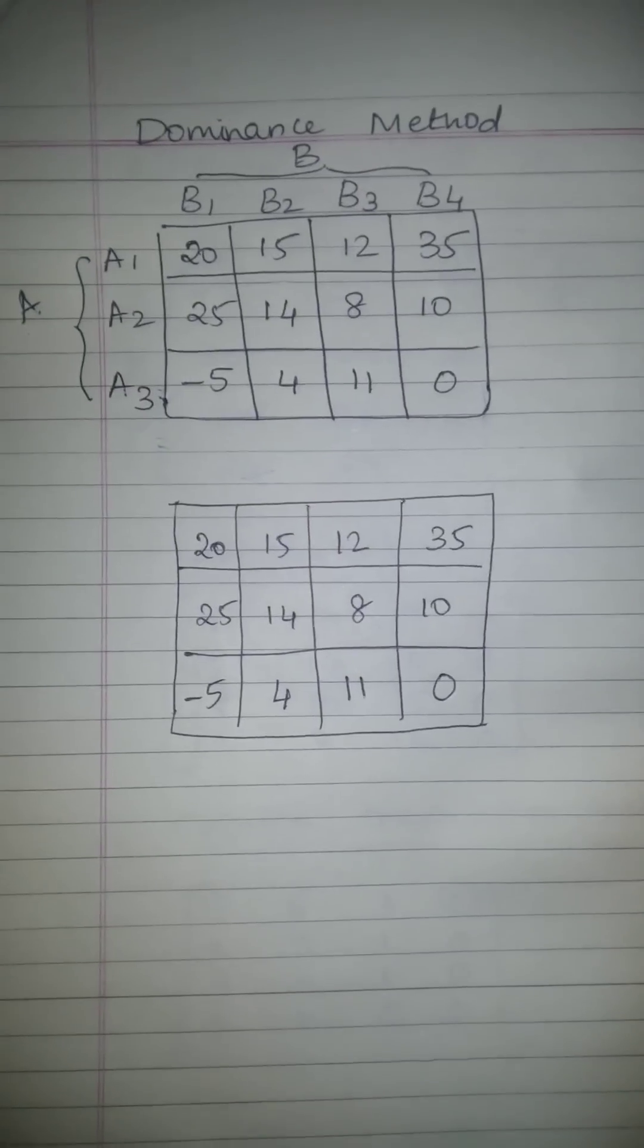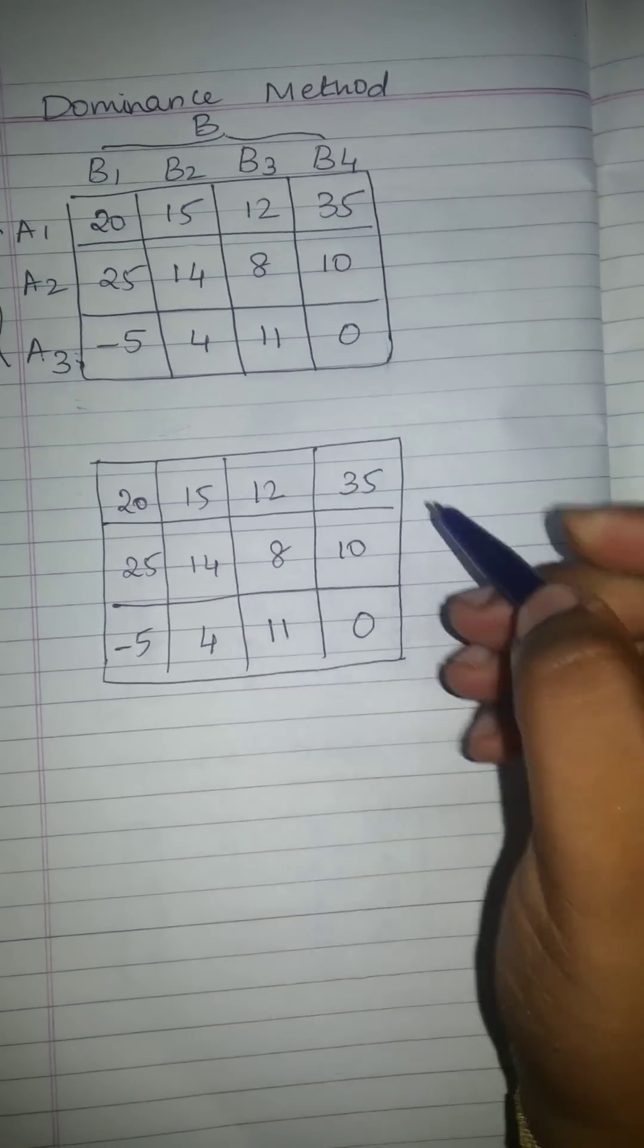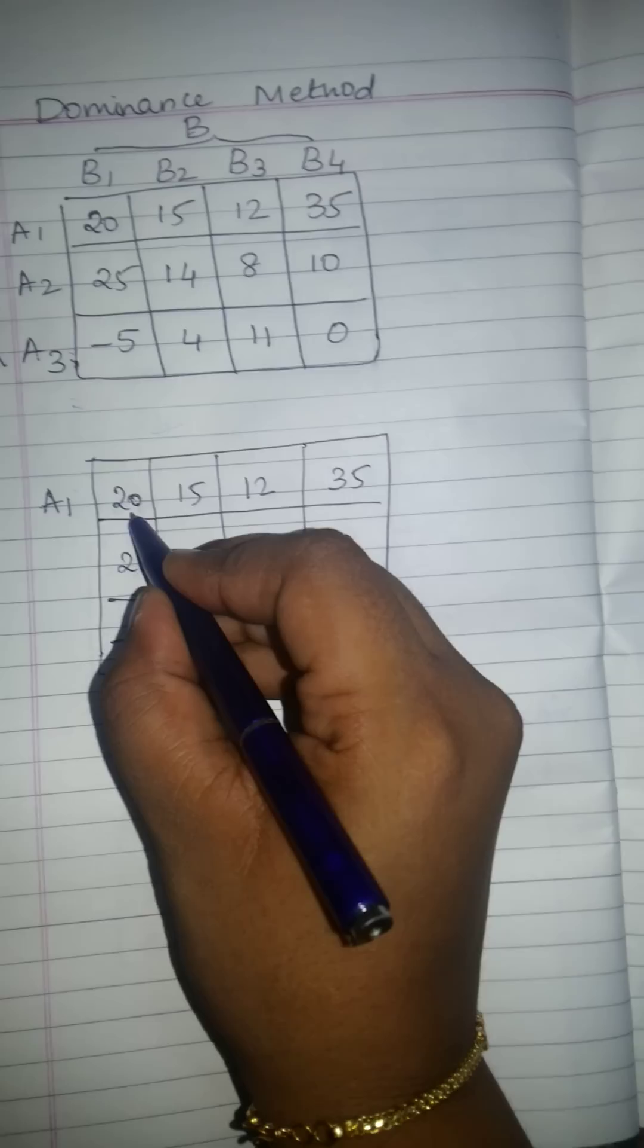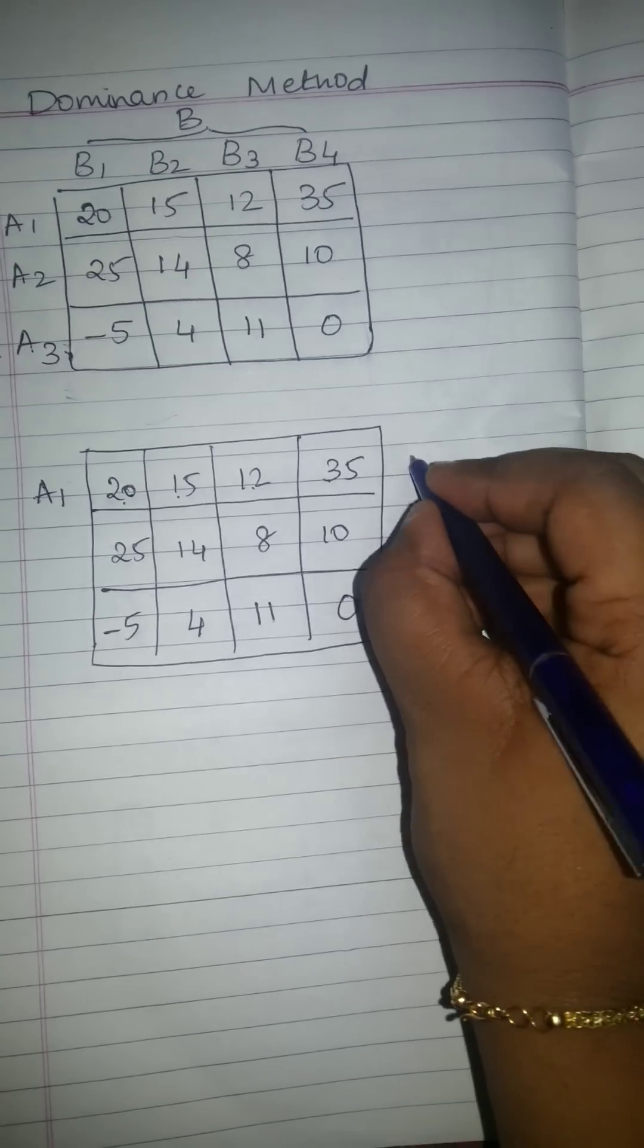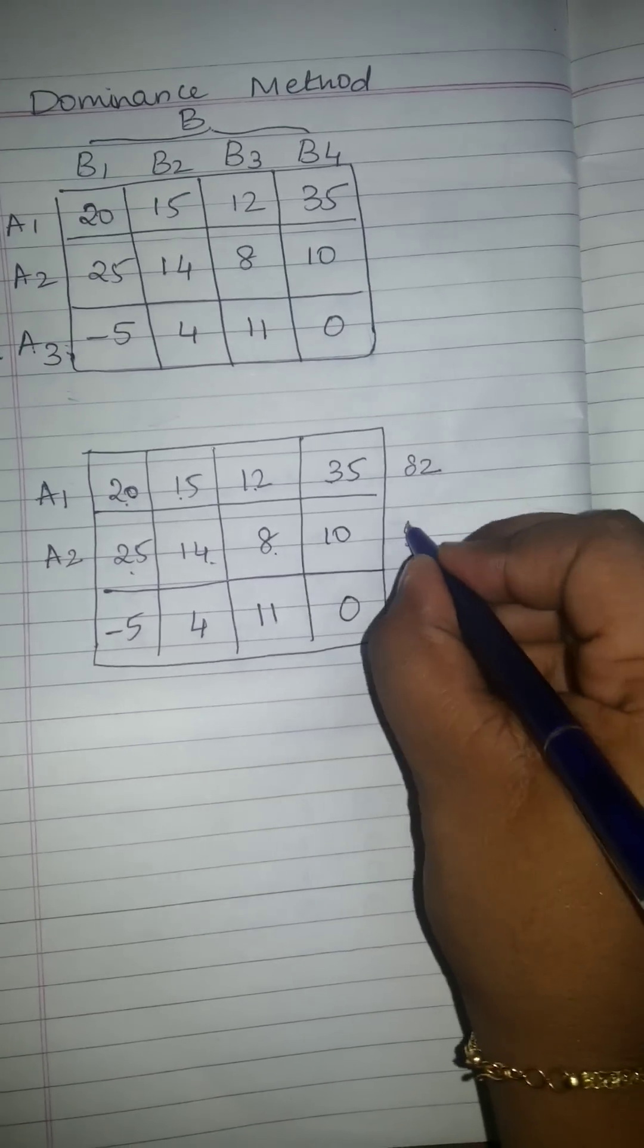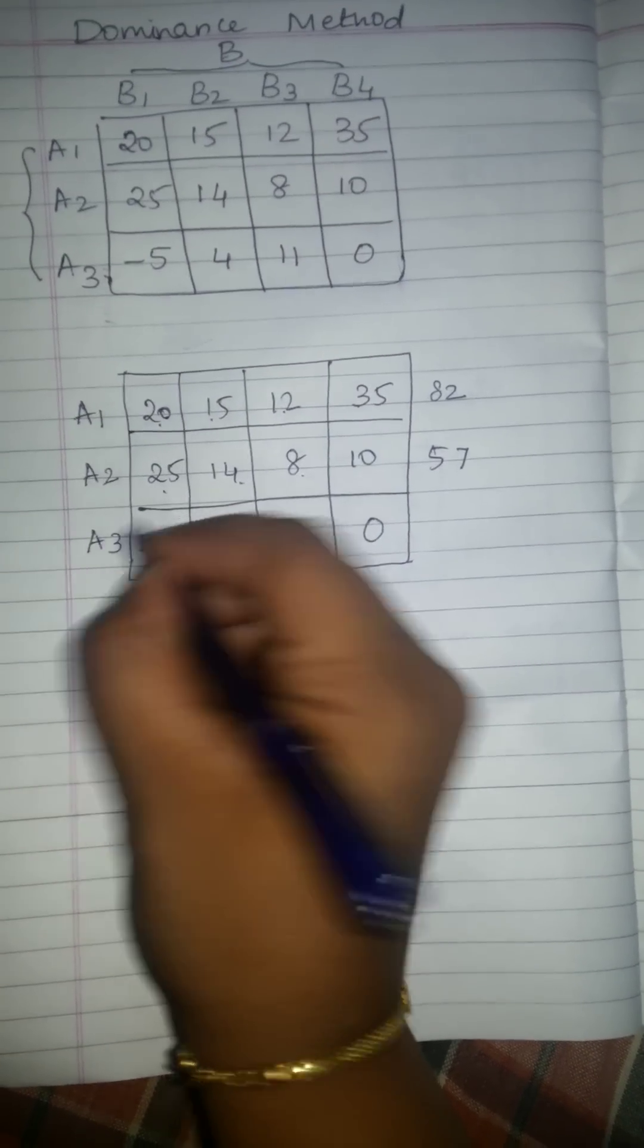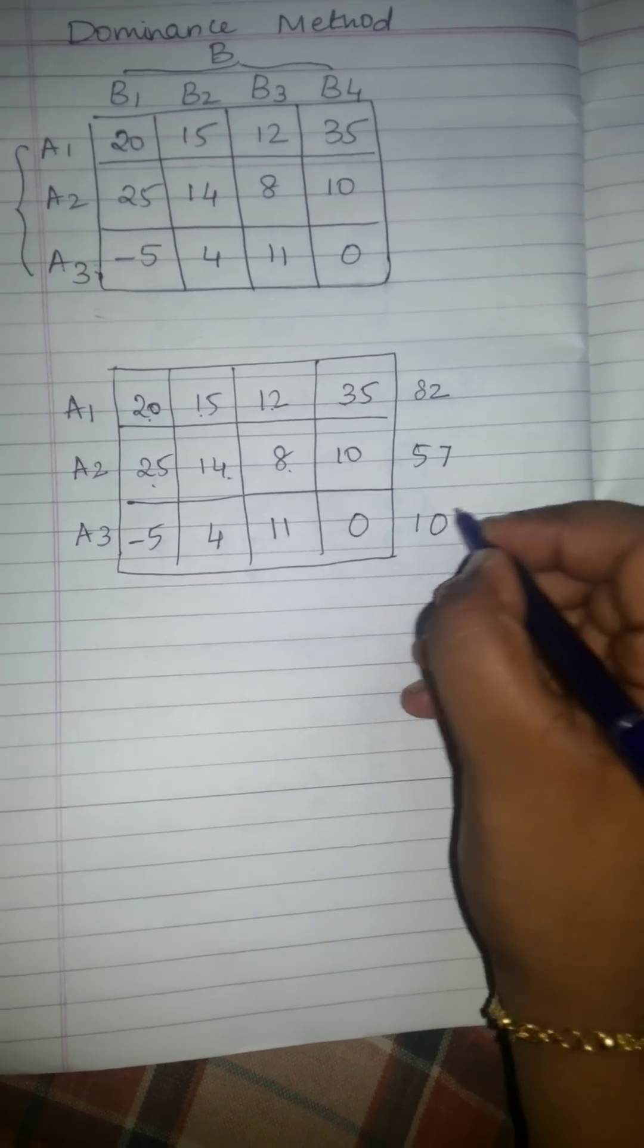Now, what I am going to do is find a total of each row and each column. The total of this row, that is A1, will be 20 plus 15 plus 12 plus 35, that is nothing but 82. The total value of A2 will be 25 plus 14 plus 8 plus 10, that will be 57. The value of A3 will be minus 5 plus 4 plus 11 plus 0, that will be 10.